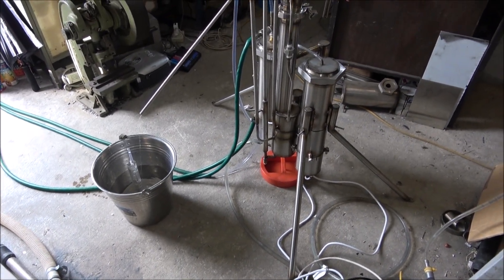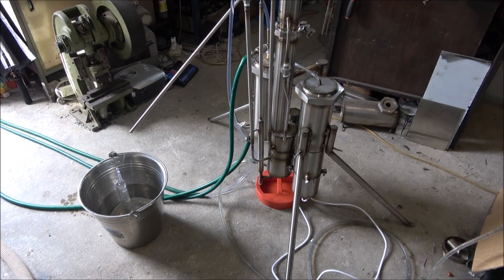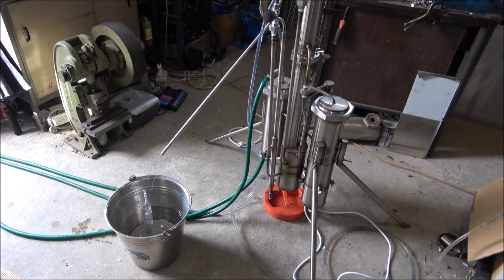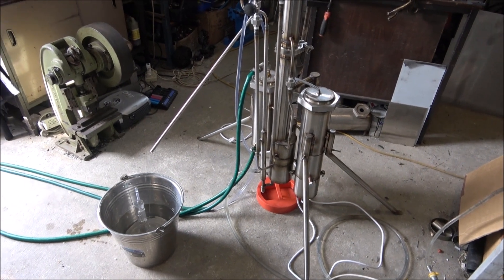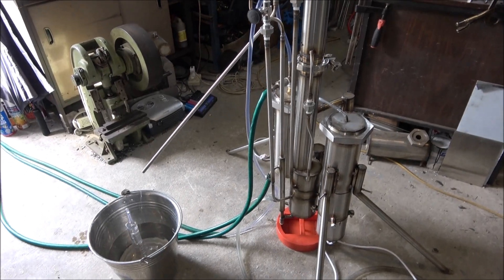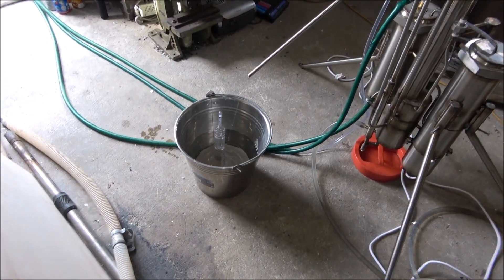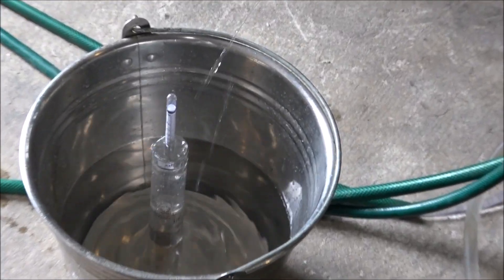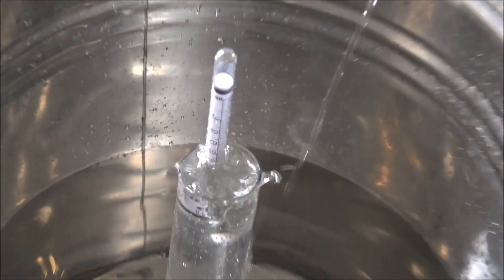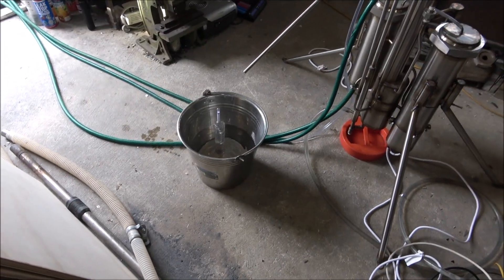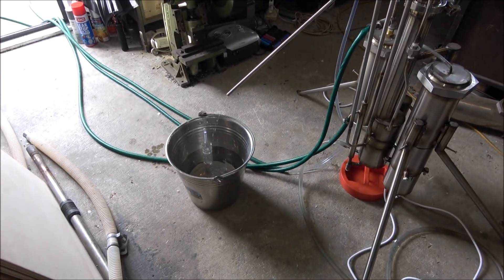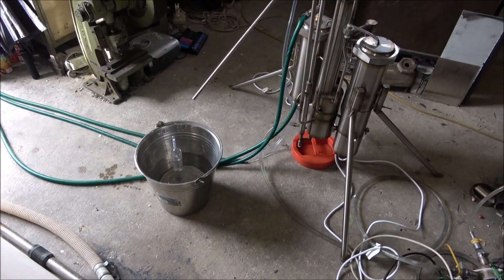Hello everyone, today I want to show you another continuous stripping alcohol still. It's a small 4 kilowatt unit currently running on sugar-based wash. Its production flow is up to 8 liters per hour at about 50%, maybe a little bit less because the alcohol is coming out slightly warmer than 20 degrees.